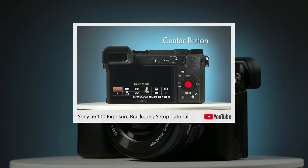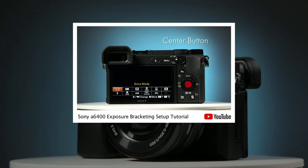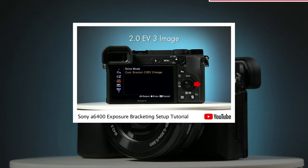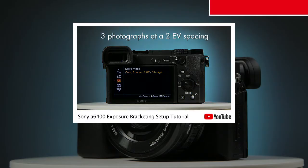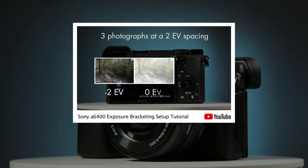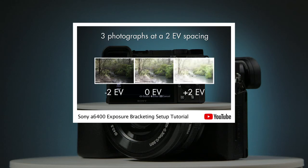And talking of bracketed photos, if you haven't watched the full tutorial on setting the AEB on this camera, then click the link at the top of the screen. I'll show you a quick recap at the end of this video anyway, but let's start with setting the self-timer.